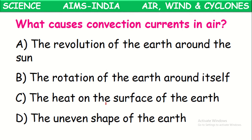What causes convection currents in air? The reason is the heat on the surface of the earth. The earth is heated at different temperatures in different places. Where temperature is high, a low pressure area is created, and air from high pressure areas rushes to occupy that low pressure area, creating convection currents of air.